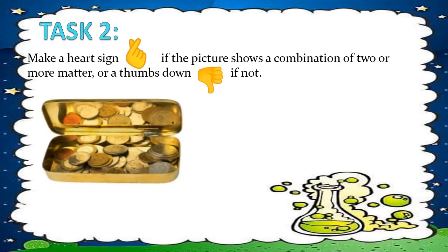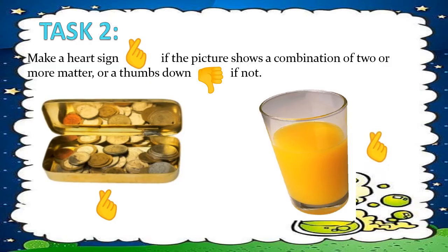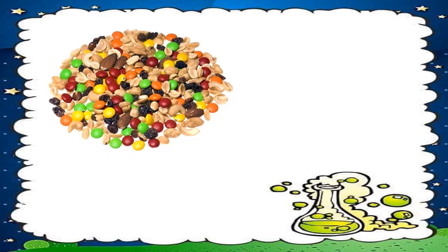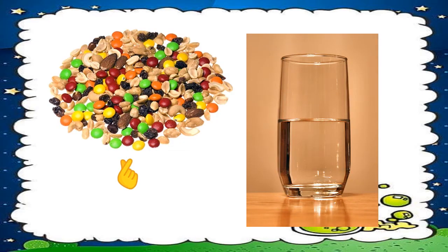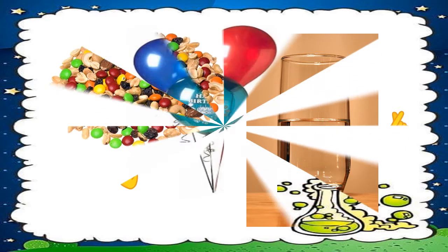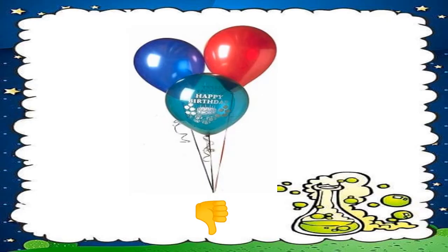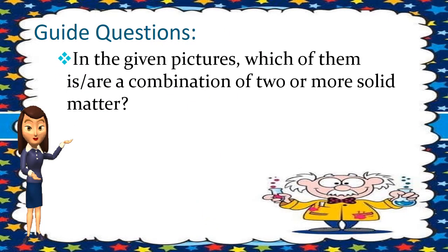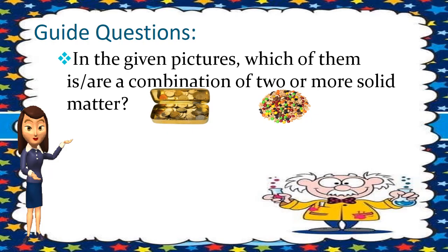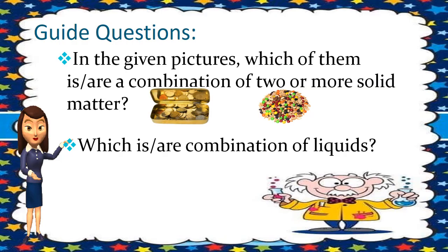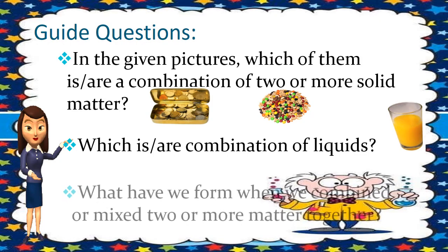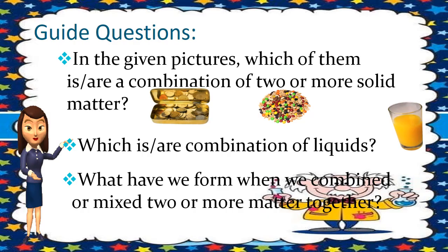Make a heart sign if the picture shows a combination of two or more matter, or a thumbs down if not. Item number one — heart sign. Item number two — heart sign. Item number three — heart sign. Number five — thumbs down. Which of them is a combination of two or more solid matter? If you answered picture one and picture three, you're correct. Which is a combination of liquids? If you answered picture two, you're also correct.